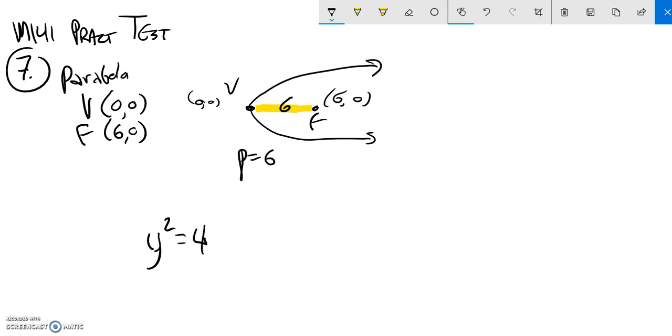And my equation is four times p, which is six, times x, so that's 24. So y squared equals 24x.